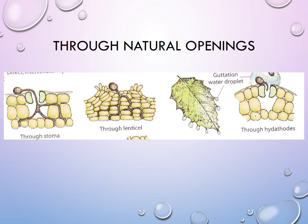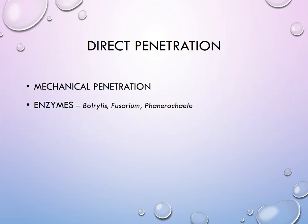The third penetration method is direct penetration, which can be either by mechanical penetration or through enzymes, and is mainly seen in fungi. Mechanical penetration is where mechanical pressure is applied on the host. Enzymatic penetration is where the organism releases enzymes like cellulase, pectinase, ligninase, and cutinase, which dissolve the surface structures of the host. Examples of organisms that produce enzymes to get inside include Botrytis, Fusarium, and Phanerochaete.